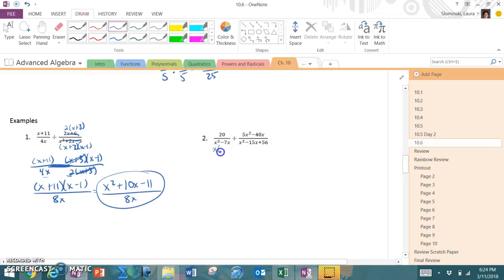Number 2. I factor out on the bottom here x times x minus 7. The top is 5x times x minus 8. The bottom using xbox is x minus 8 times x minus 7. So again, I would start it as 20 over x times x minus 7 times the reciprocal of the bottom so x minus 8 times x minus 7 over 5x times x minus 8. I can cancel out x minus 7, x minus 8 and I am left in this case with just a 20 on top and a 5x squared on the bottom. I see the 20 and the 5 and I know they're both divisible by 5 so I'm left with 4 over x squared.